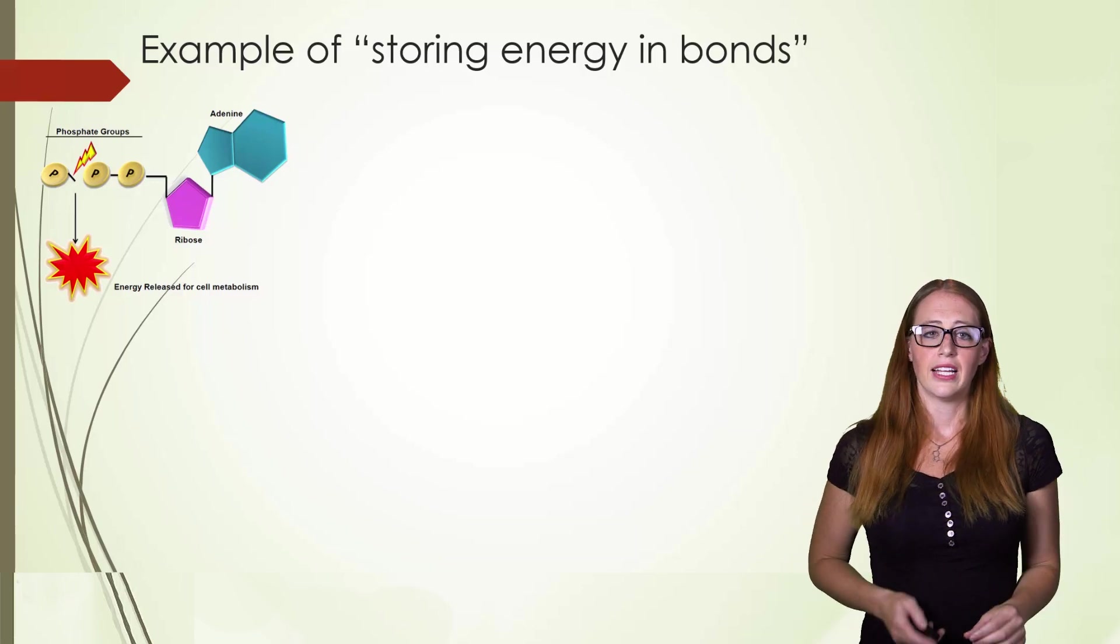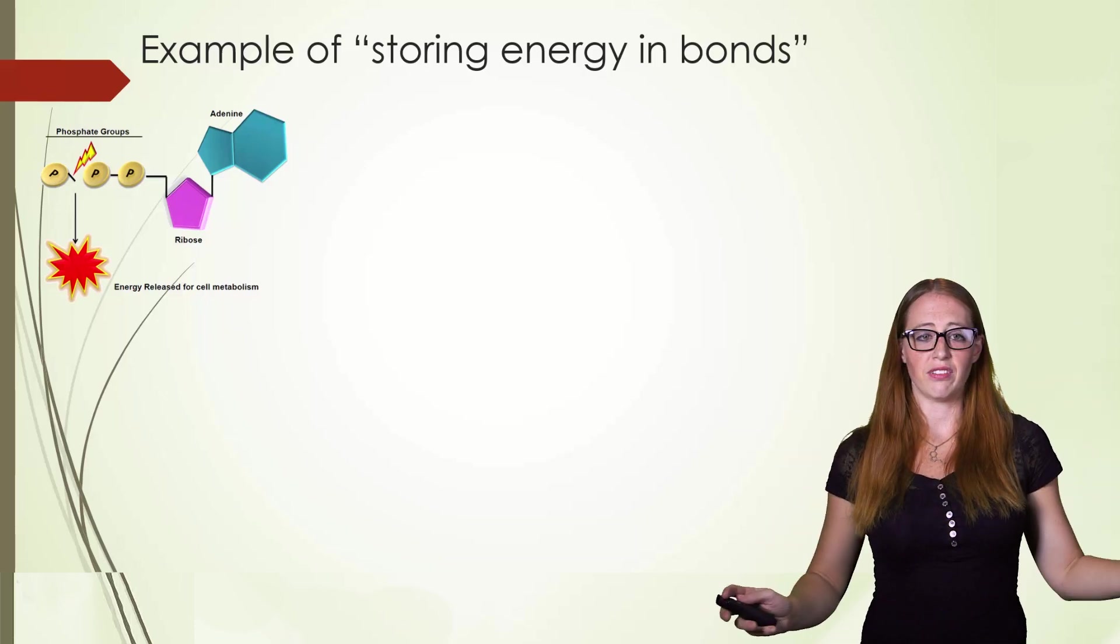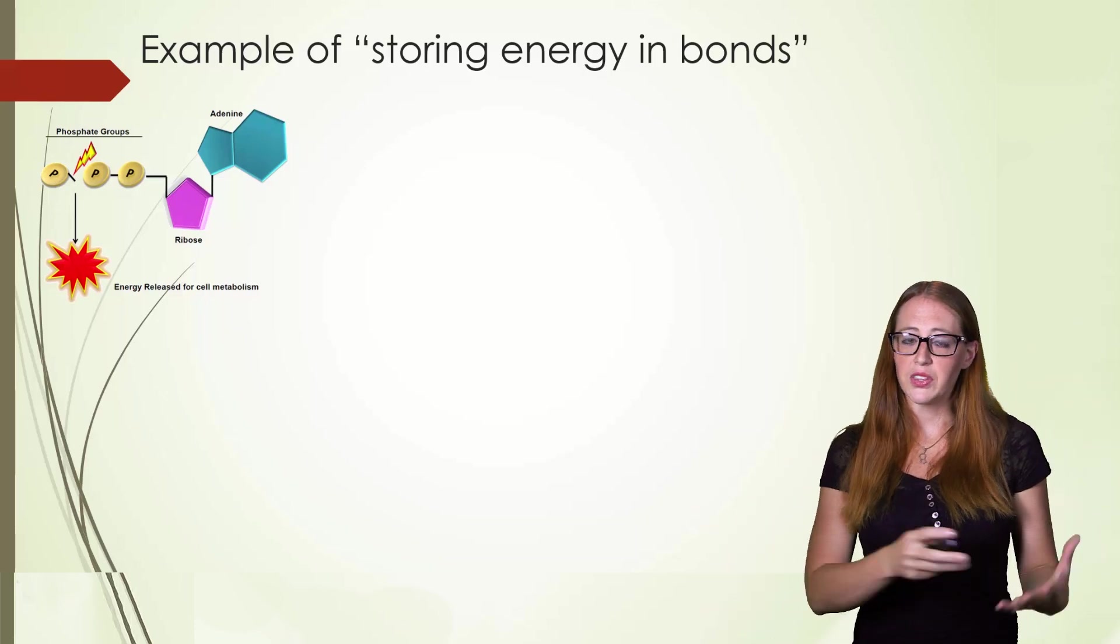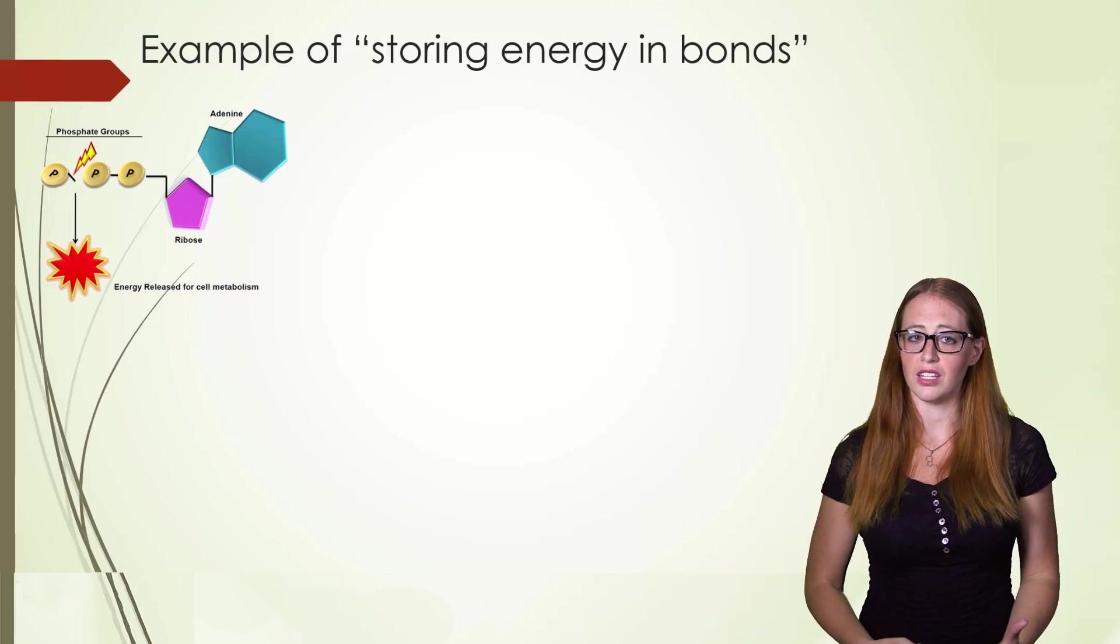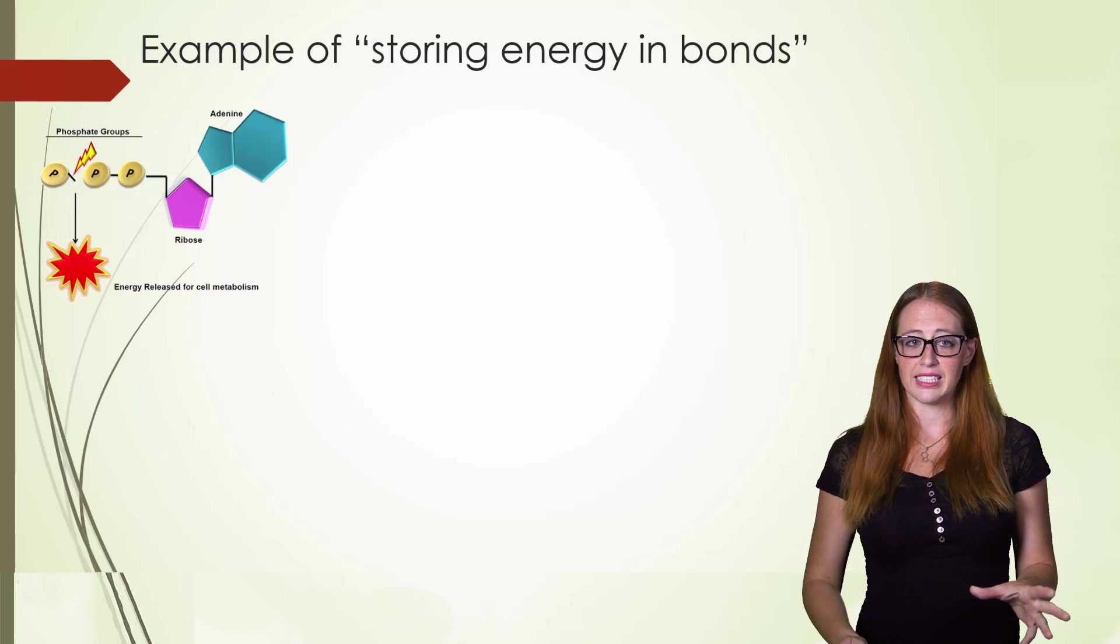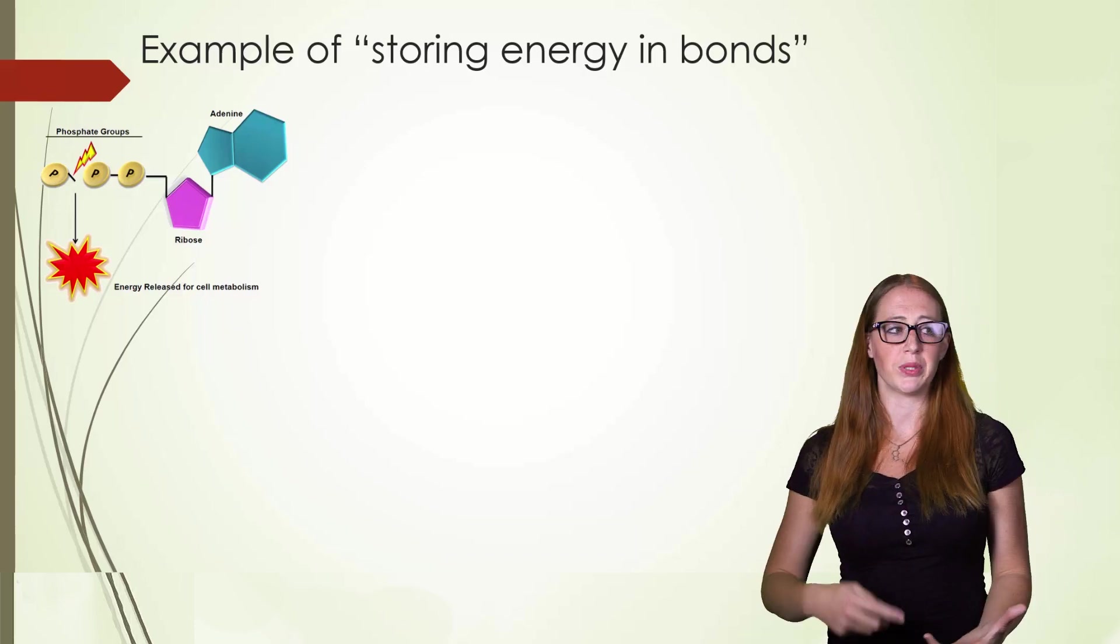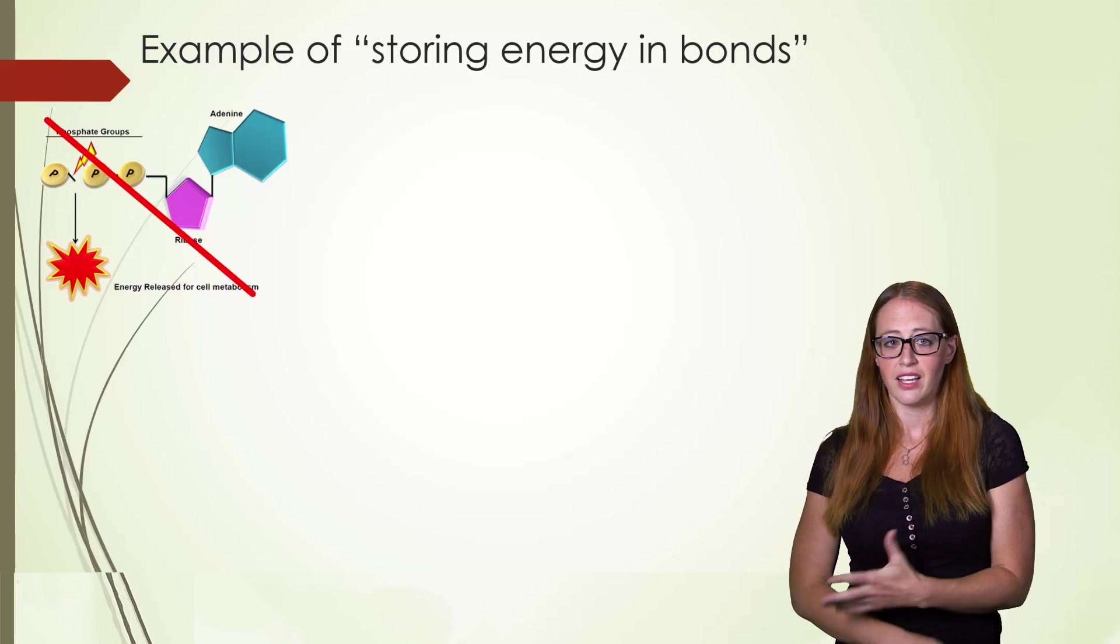And they'll often draw this big ATP molecule and they'll say ATP stores energy in that phosphate bond. You see there's a little lightning and they say oh that phosphate falls off and you get energy. And the way that it's drawn makes it look like that bond is releasing energy. But that can't be true. When you break a bond you use energy. This is wrong.